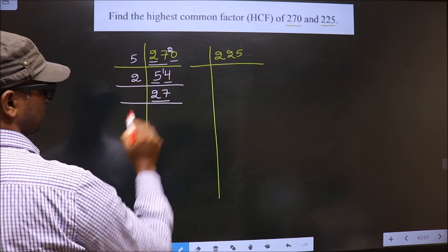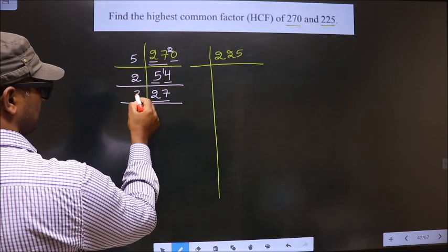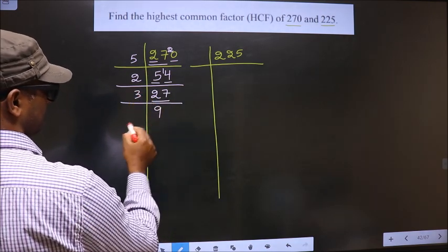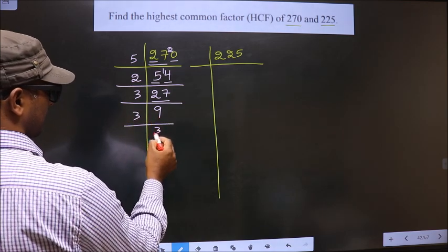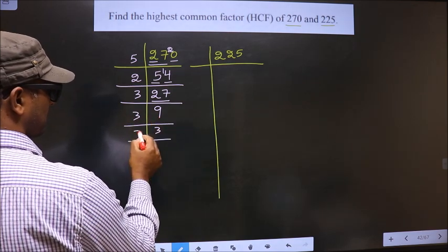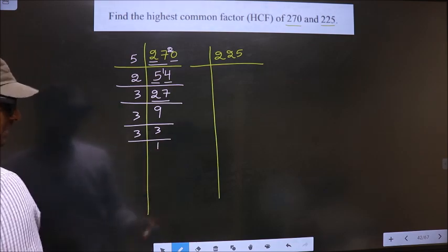Now here we have 27. 27 is nothing but 3 times 9, which is 27. Now 9 is 3 times 3, which is 9. Now 3 is a prime number, so we take 3 times 1 is 3.